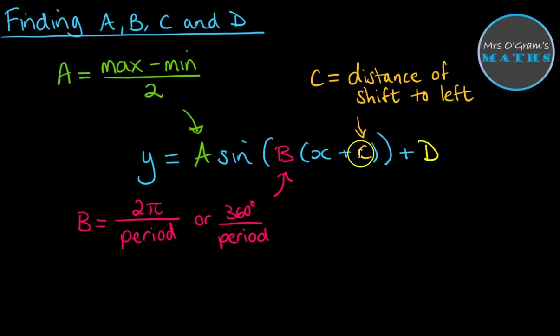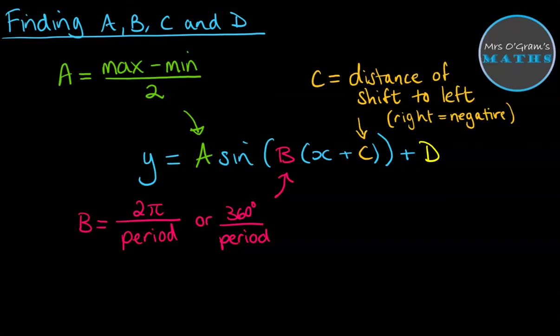Now C is the distance of our shift to the left, so we'll take a look at our curve and see how much it's been shifted to the left compared to the original sine curve. And that will be negative if we have a shift to the right.